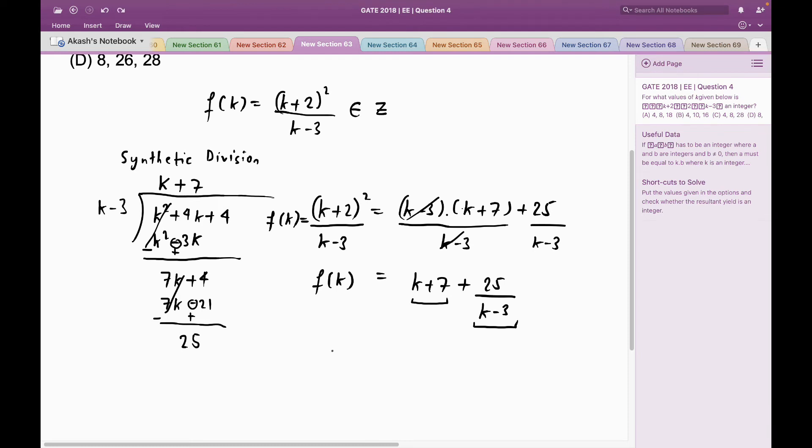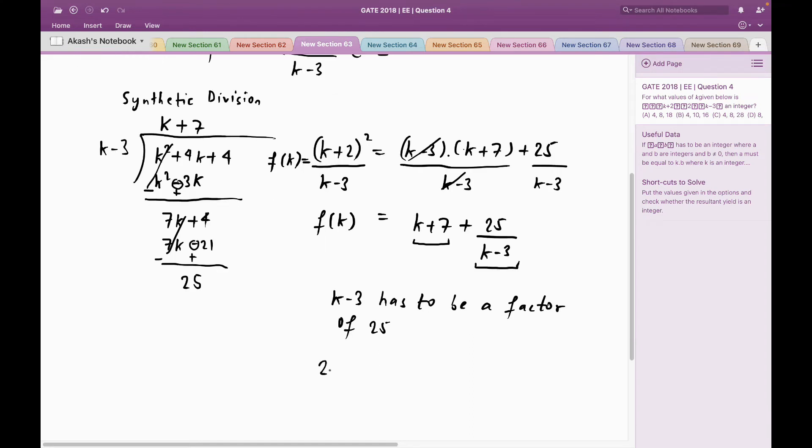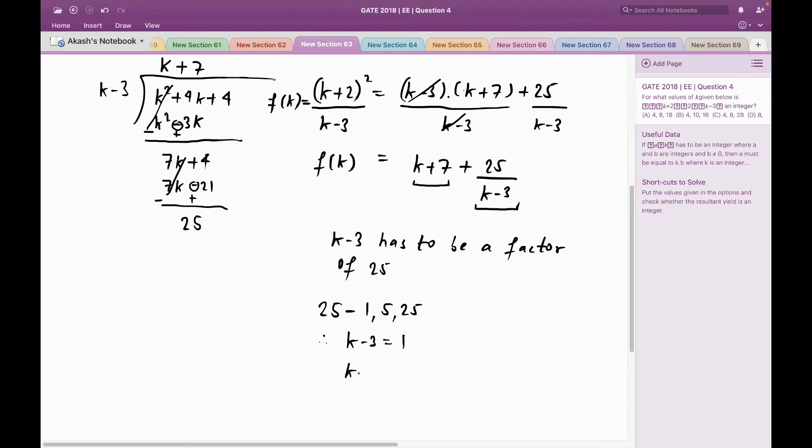In order to do that, the denominator has to be a factor of 25. So now which means the factors of 25 are 1, 5, and 25. Therefore k-3 can either be 1, or k-3 can either be 5, or k-3 can either be 25.